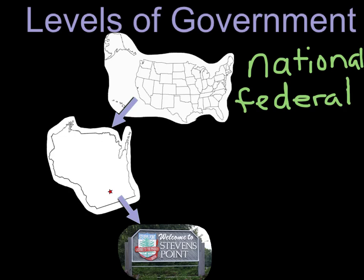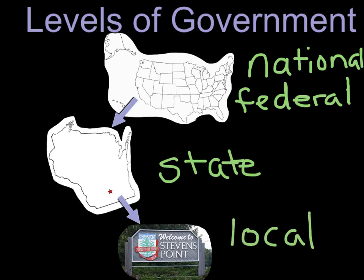At our next level down in the United States, we have states — you'll see our lovely state of Wisconsin. Remembering the name of that government level is fairly easy because it's just state government. And then down at the bottom, you see our lovely Welcome to Stevens Point sign. It's not just cities and towns — we're also talking about counties, villages like the village of Plover or the village of Whiting, cities like Stevens Point, Madison, or Milwaukee, and counties like Portage County, Marathon County, Wood County. These are all under the broad term of local government.